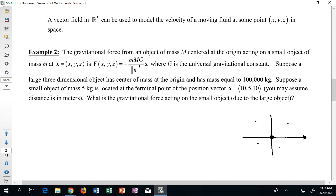Suppose that a large three-dimensional object has center of mass at the origin, and maybe its mass is equal to 100,000 kilograms. Suppose that there's a small object that's of mass five kilograms, and it's located at the terminal point of the position vector 10, 5, 10. So it's at the point 10, 5, 10 in space. Let's assume distance is measured in meters. We could then ask what's the gravitational force acting on the small object, specifically due to the large object.